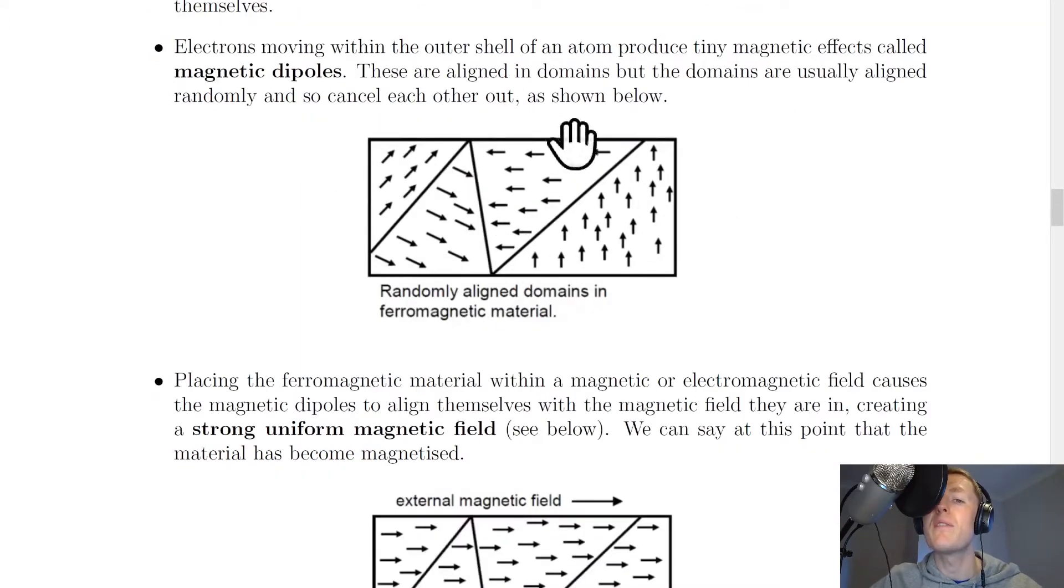So in this picture we've got a ferromagnetic material where the domains are randomly aligned. This means the magnetic dipoles in this domain are aligned differently to the ones in this domain and this one and this one and so on. And the net effect is that they all cancel each other out.